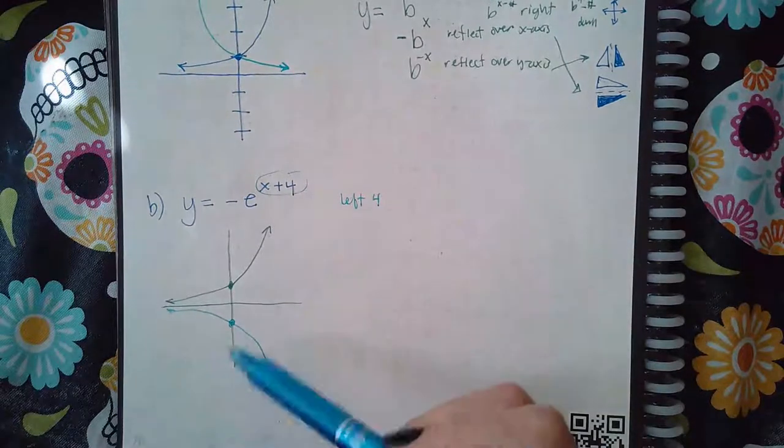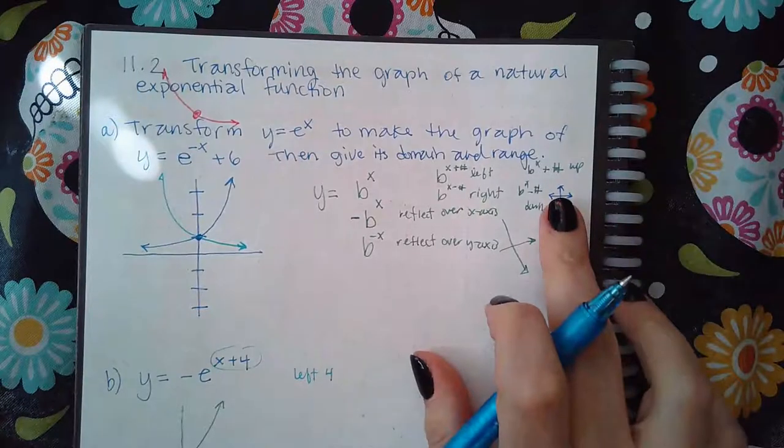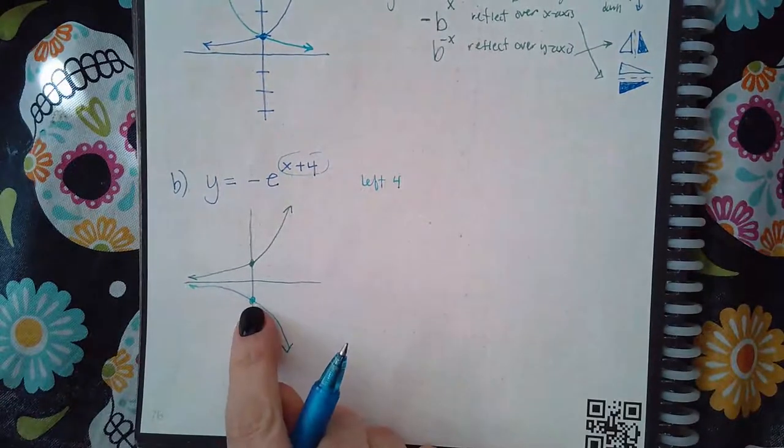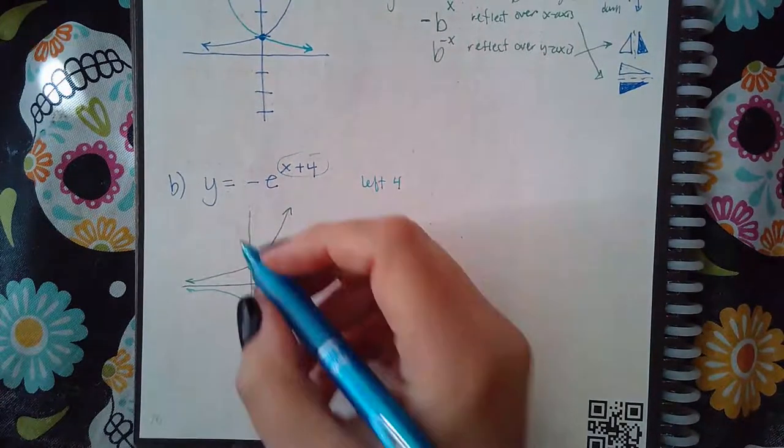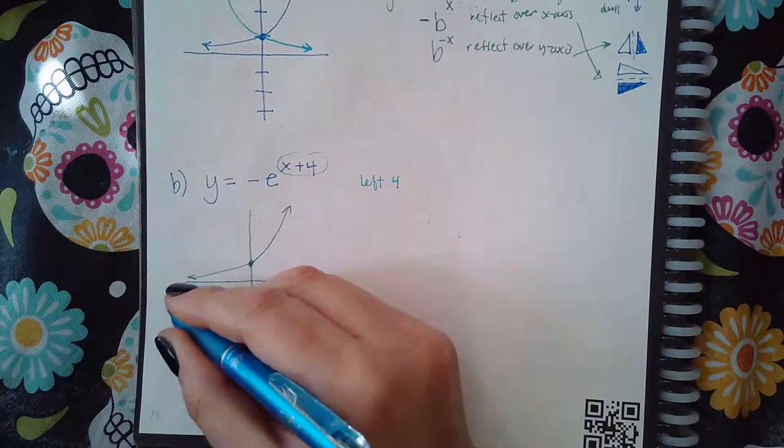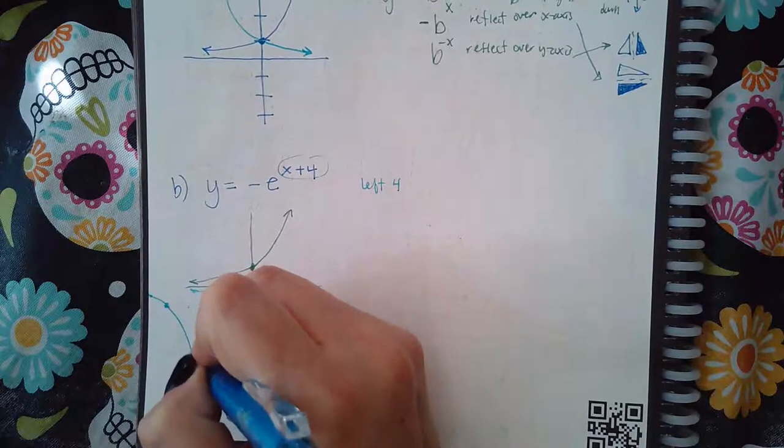So after I've reflected it, I'm gonna grab it. I'm gonna click on this icon with the little arrows. And then from there, it's gonna let me grab the dot where it is right now and then move it around. And so I would have to move it over one, two, three, four, and then it would draw the graph over there, okay?